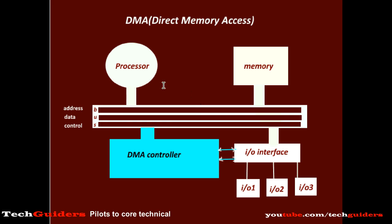The I/O transfer can be initiated either by the processor or by the I/O device by asserting a DMA request signal to the DMA controller. Upon receiving a DMA request from an I/O device, the DMA controller will raise an interrupt signal to the processor in order to initiate the DMA transfer.